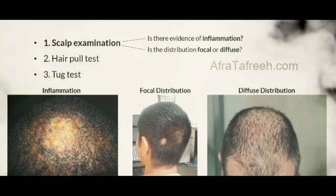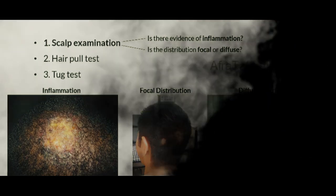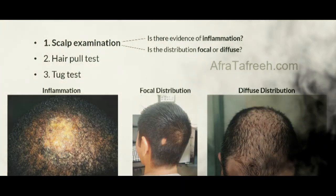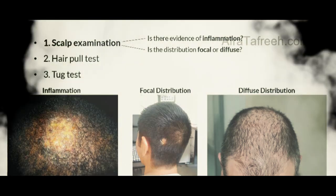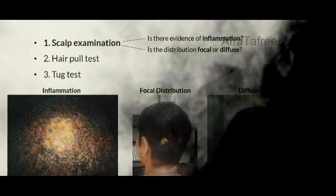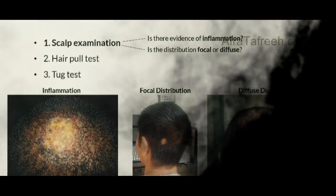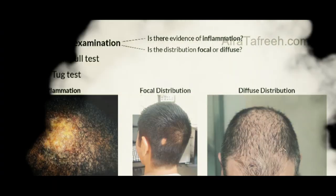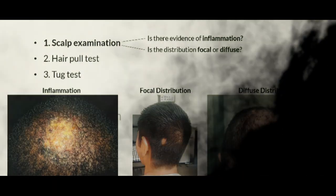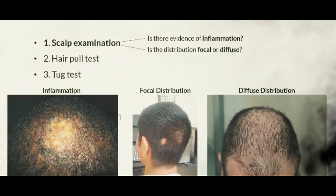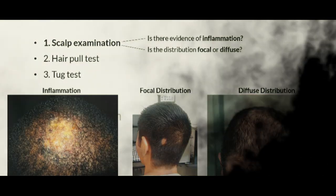During the scalp examination we also ask whether the distribution of hair loss is focal or diffuse. The patient in the center of our screen has a focal distribution, whereas the patient in the bottom right-hand corner demonstrates a more diffuse distribution. These distinctions between inflammatory and non-inflammatory alopecia, as well as focal and diffuse patterns of hair loss, will be essential in our discussions moving forward.